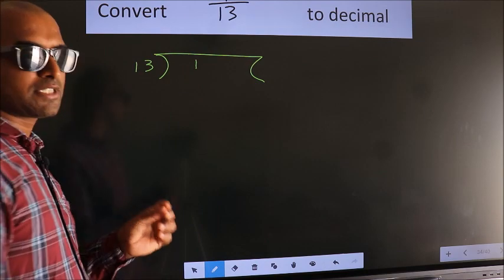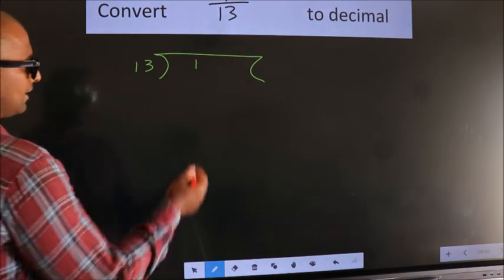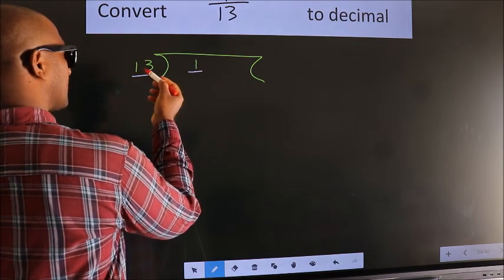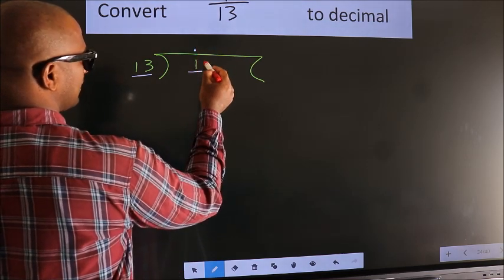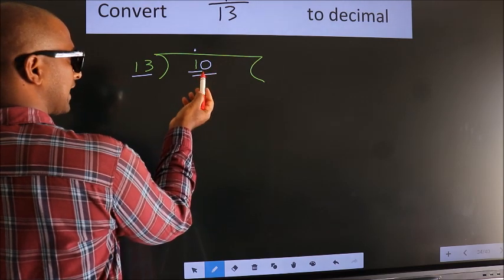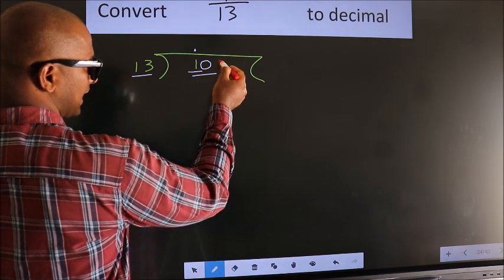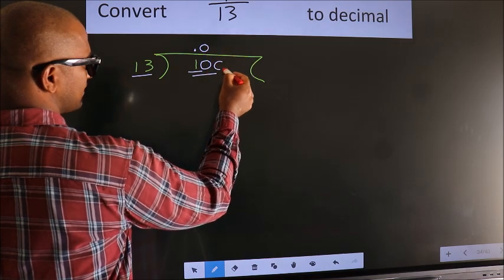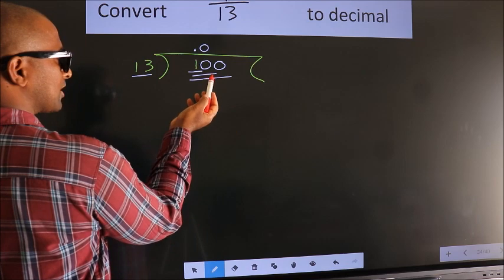This is step 1. Next, we have 1 here and 13 here. 1 is smaller than 13, so we put a dot here and take 0 — so 10. 10 is still smaller than 13, so we take one more 0 to get 100.